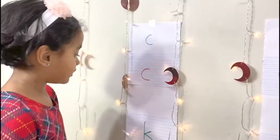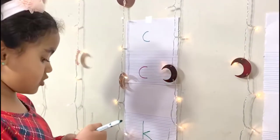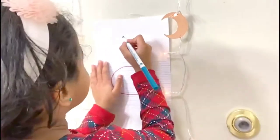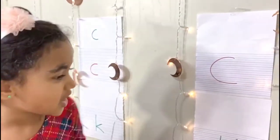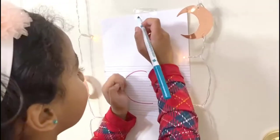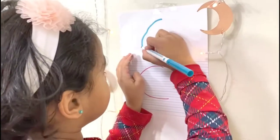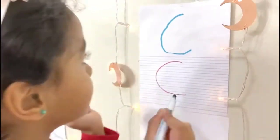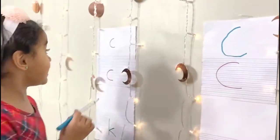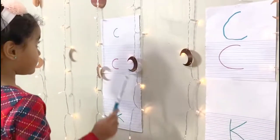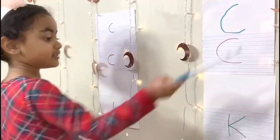Now let's go on to big C. Let's go over to the other side. Now we've reached big C. They're the same shape — these two are the same, but this one is smaller and this one is bigger.